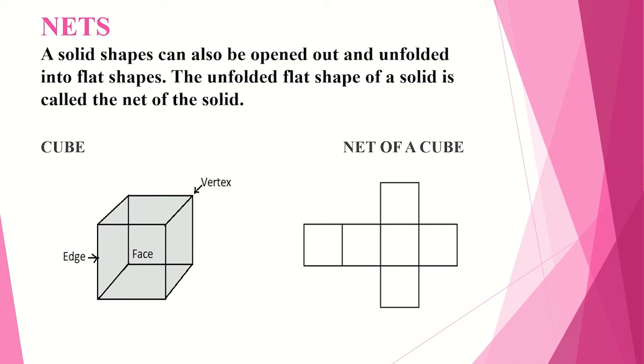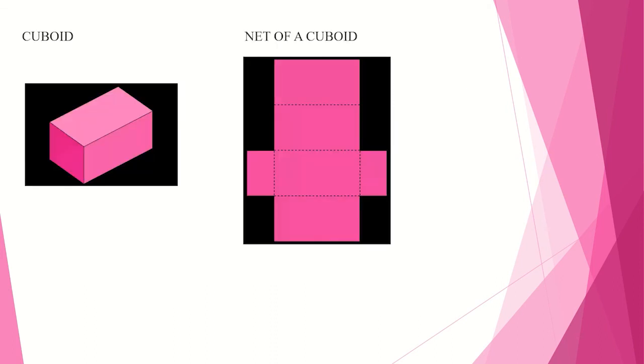So here in the first picture we have a cube. You are going to open that and when it is unfolded, when you are making a flat shape, that becomes the net of a cube.